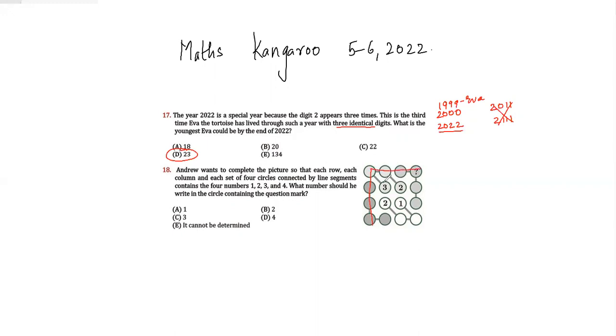They're saying 1, 2, 3, 4 has to be like this, and also if you see these four circles connected to these line segments, even here 1, 2, 3, 4 has to appear.